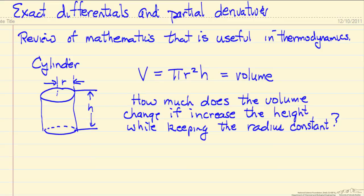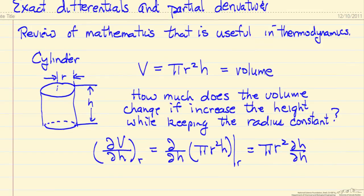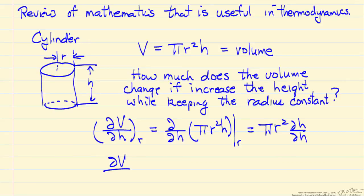The question is: how much would the volume change if we increase the height while keeping the radius constant? So what we're asking is the partial derivative of volume with respect to height at constant r, which is the partial derivative of πr²h keeping r constant. Pi is constant, r² is constant, and the derivative of h with respect to h is 1. So this partial derivative equals πr².